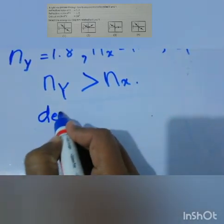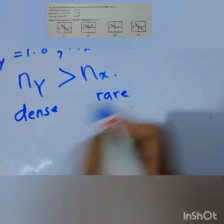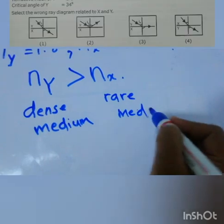So you can consider Y as the denser medium and X as the rarer medium. This is dense medium and rare medium.